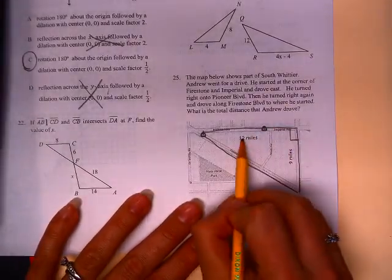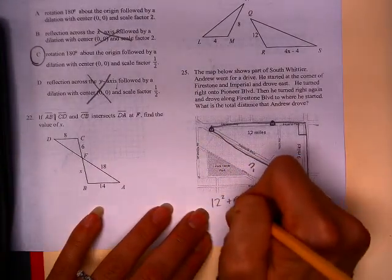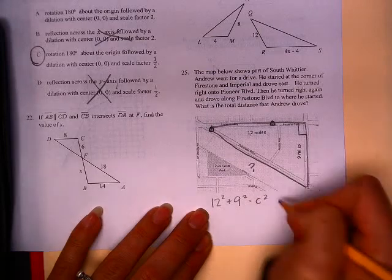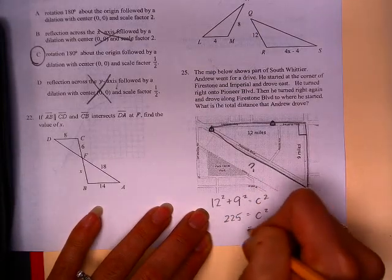So, obviously, we have 12 plus 9 already. But we also need to figure out this one here. So, we have a little Pythagorean theorem. So, C squared is equal to 225. And C is equal to 15. I think. Yes.